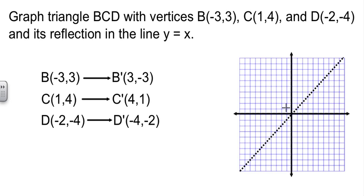I'm going to plot the original points first. 3, negative 3, there's b. C at 1, 4, c at 1, 4, d at negative 2, negative 4. I can't believe I just did that. I plotted b prime instead of b. How dare I? Negative 3, 3, there's b. And I'll connect those with a solid line. And you see we have a triangle, which we expected, with 3 points. Okay.